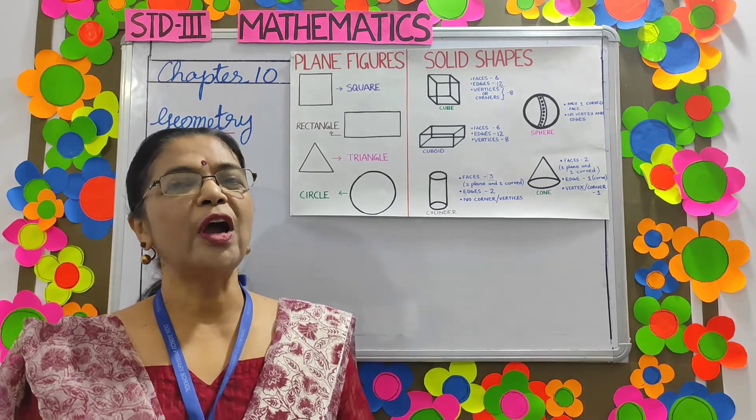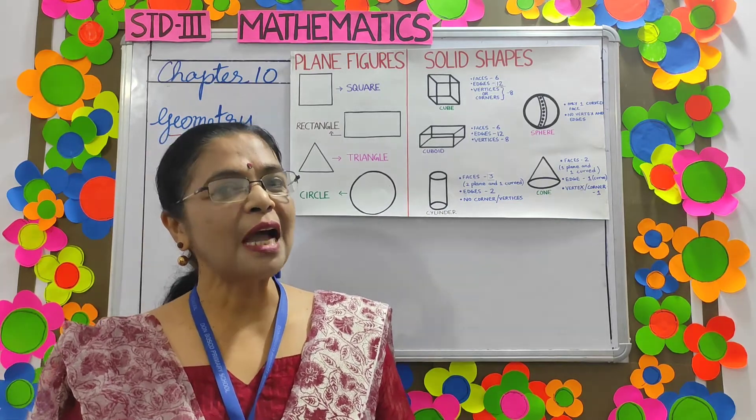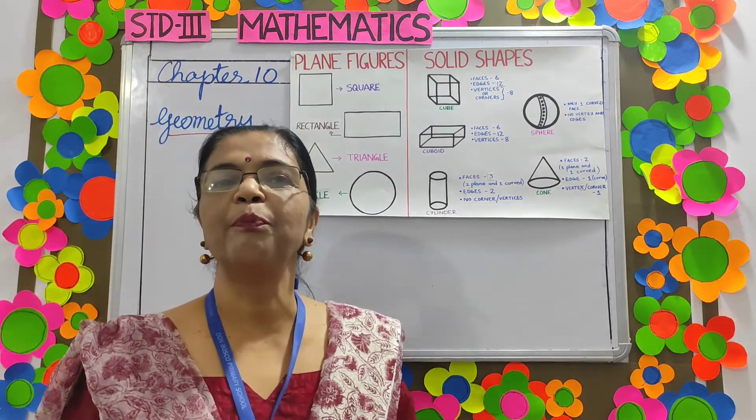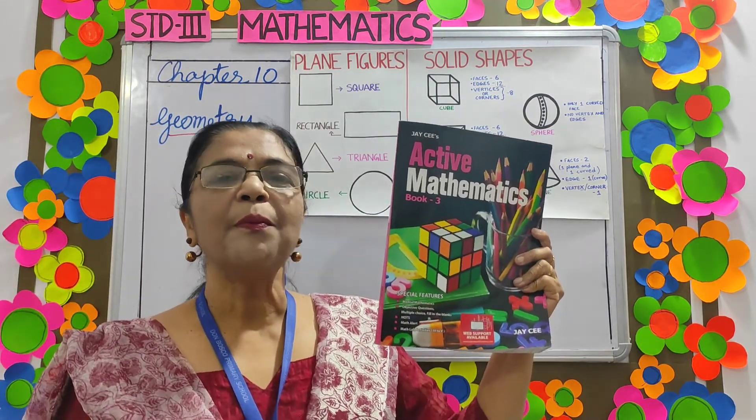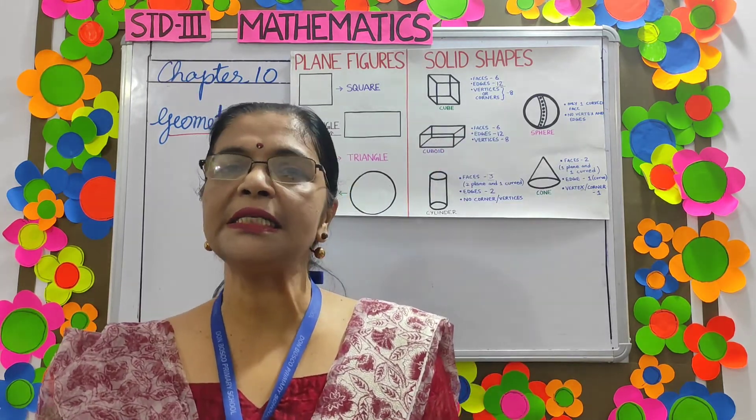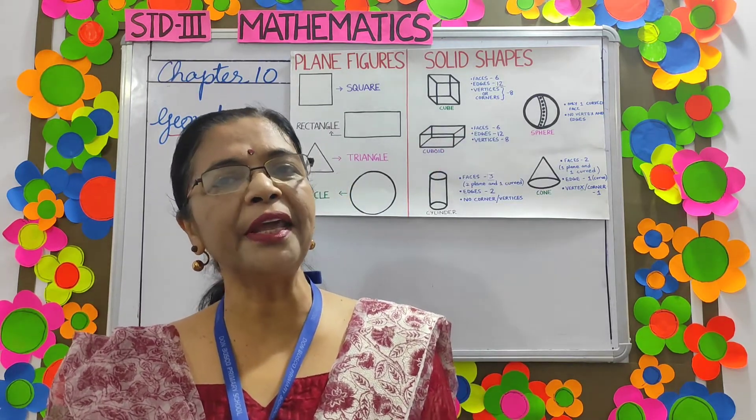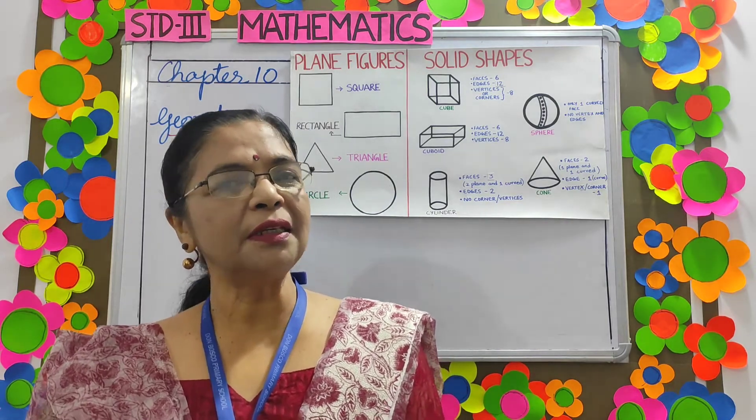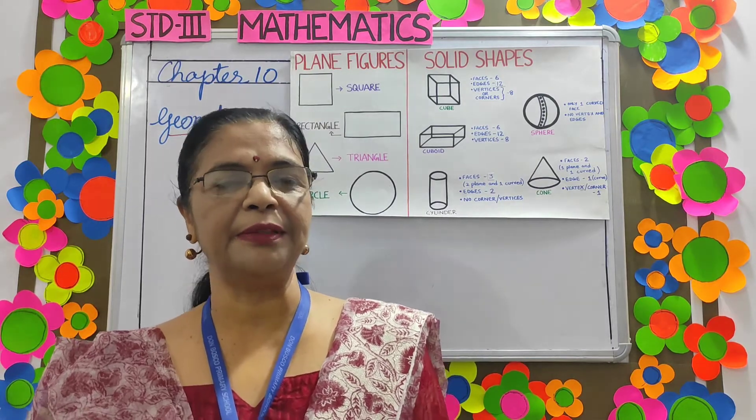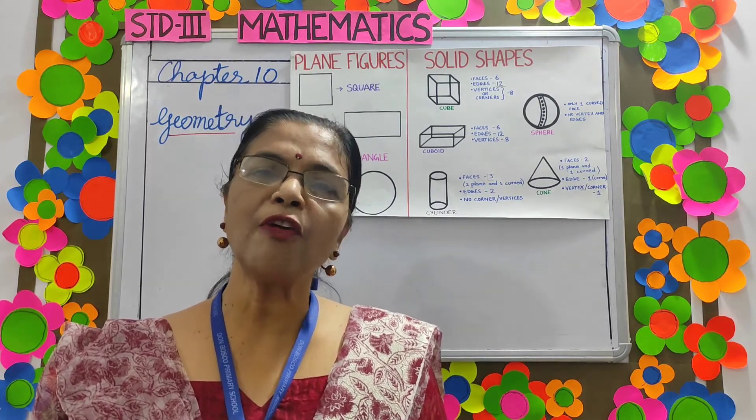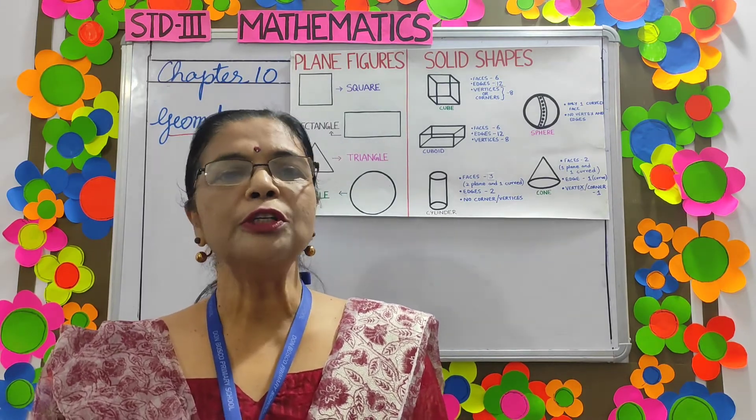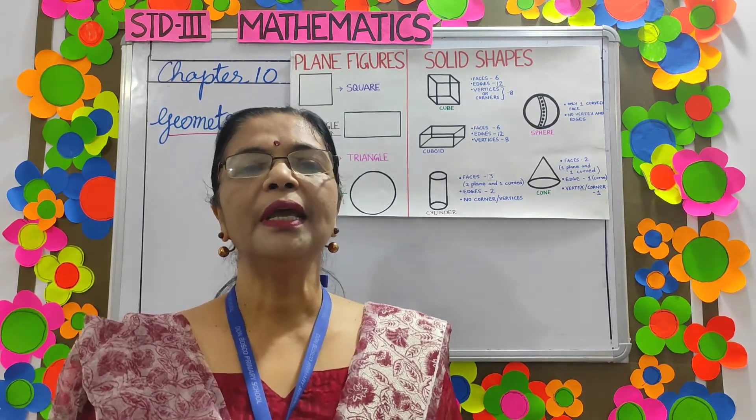Today we are going to learn Chapter 10 Geometry from Active Mathematics Book 3. The word Geometry is derived from Greek words Geo means Earth and Metron means Measurement. Measurement of any shape or figure relates to Geometry.